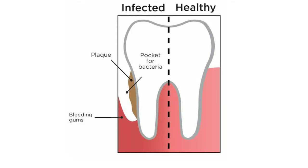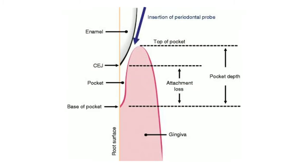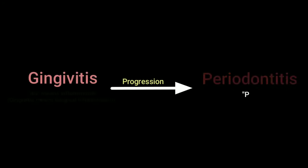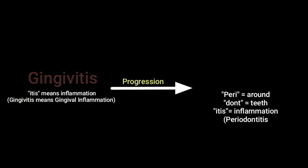A periodontal pocket is a pathologically deepened gingival sulcus. The depth of the normal gingival sulcus is between 1 to 3 millimeters. Any increase in this depth because of the attachment loss around the teeth is considered to be a periodontal pocket. Periodontal pocket is a form of chronic periodontal inflammation or periodontitis, which is the advanced disease form of gingivitis.